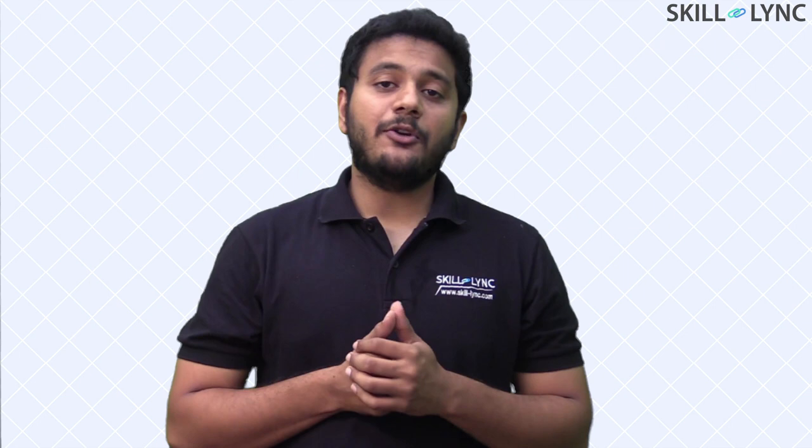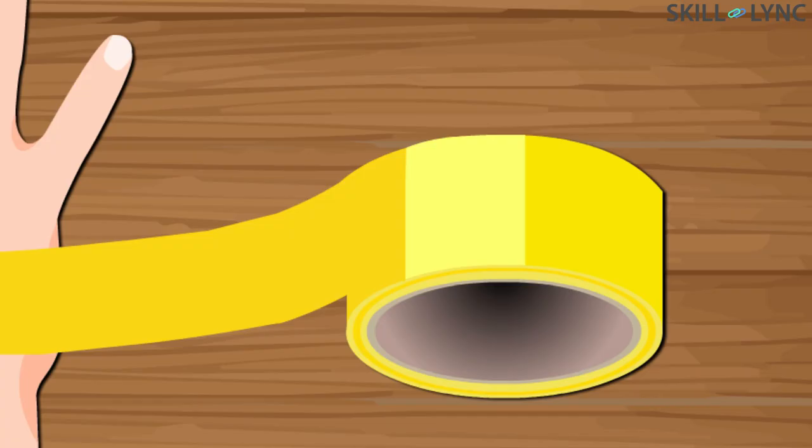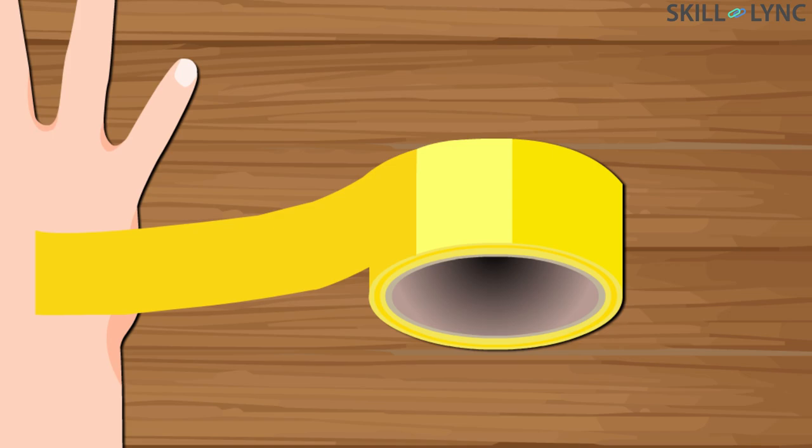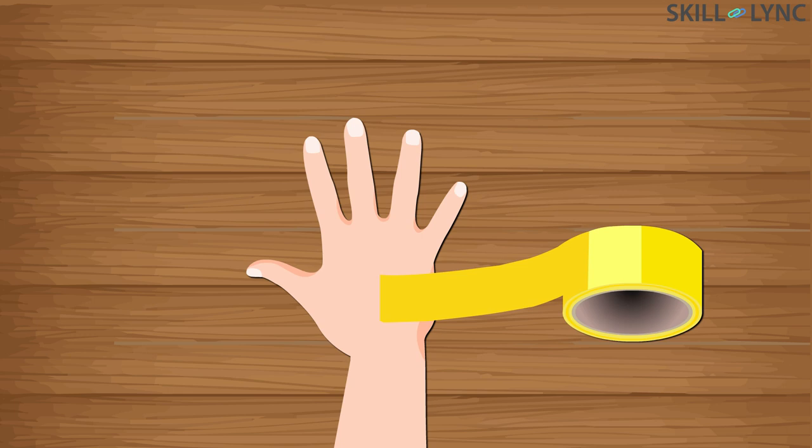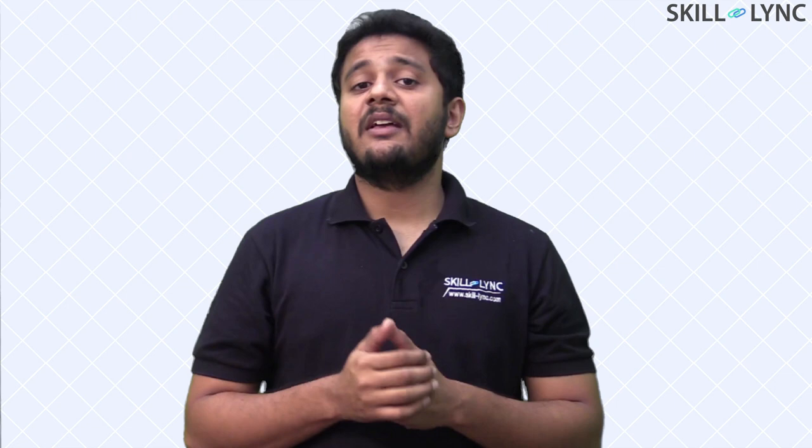Shear stress is developed when the load acts parallel to a surface. A great example to demonstrate shear is to use a piece of sellotape and try sticking it on top of your arm. When you pull the sellotape, you pull the top layer of the skin, which pulls subsequent layers of skin below the first layer. The process is painful but really helpful in understanding shear. Now do not try this at home. To summarize: if the force acts normal to the surface, it causes normal stress, and if the force acts parallel to the surface, it causes shear stress.